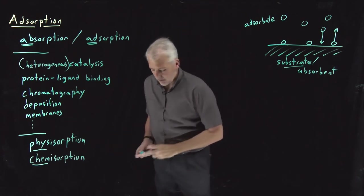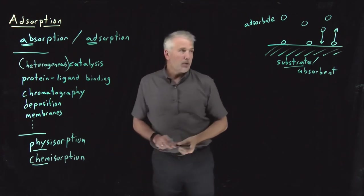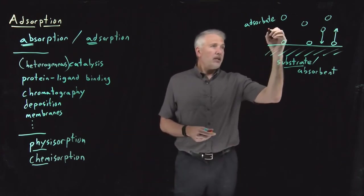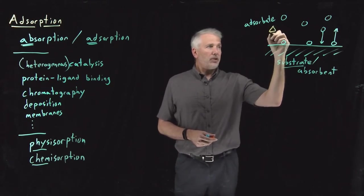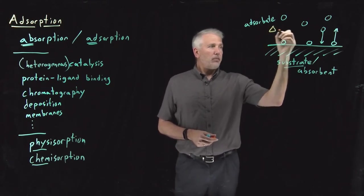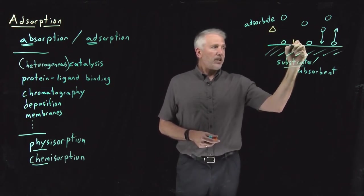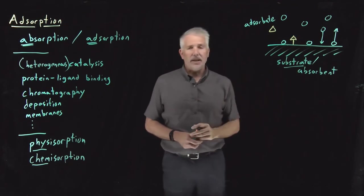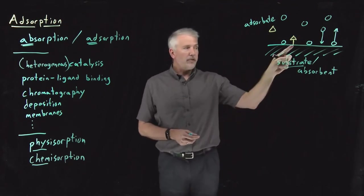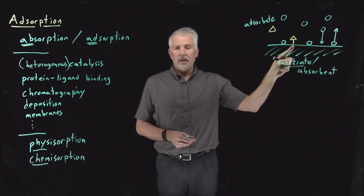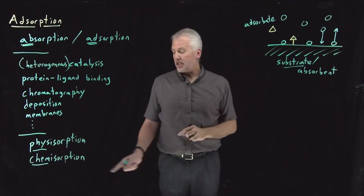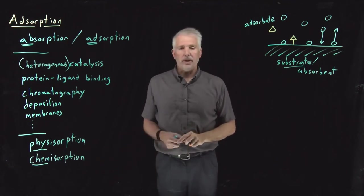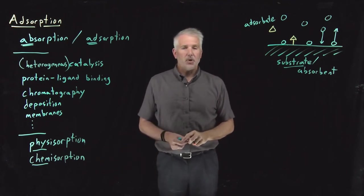If I were to show you an example of chemisorption, that might be some other molecule — my triangle-shaped molecule — that will bind to the surface. When it binds to the surface, it chemically binds. If there's a covalent bond to the surface when it binds, then there's a chemical change taking place, and that would be chemisorption.